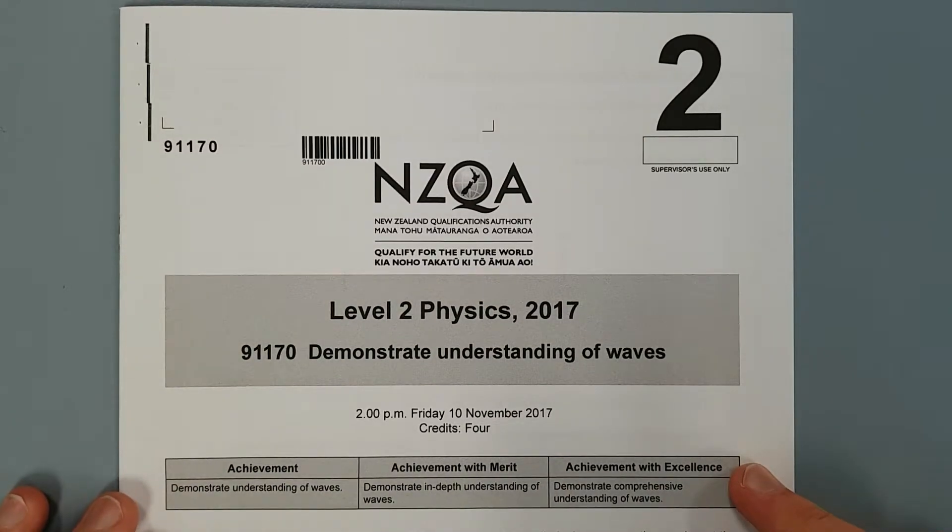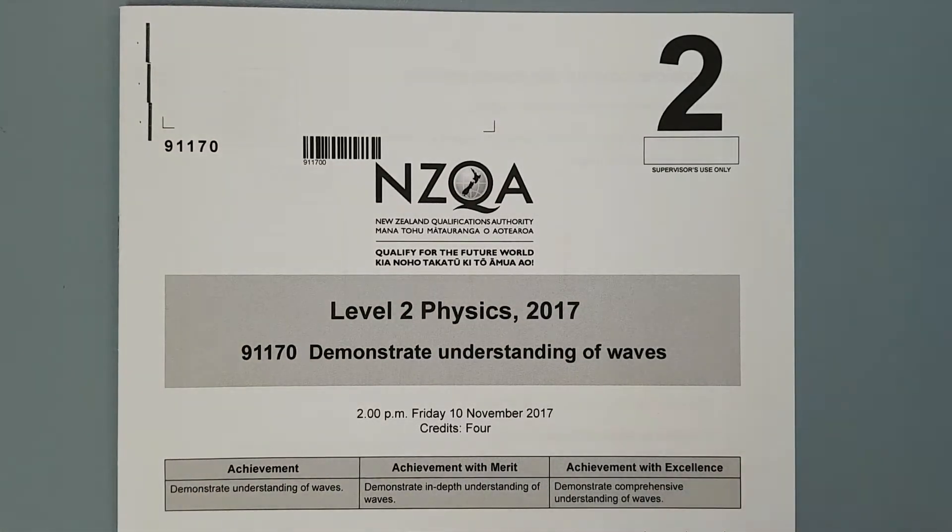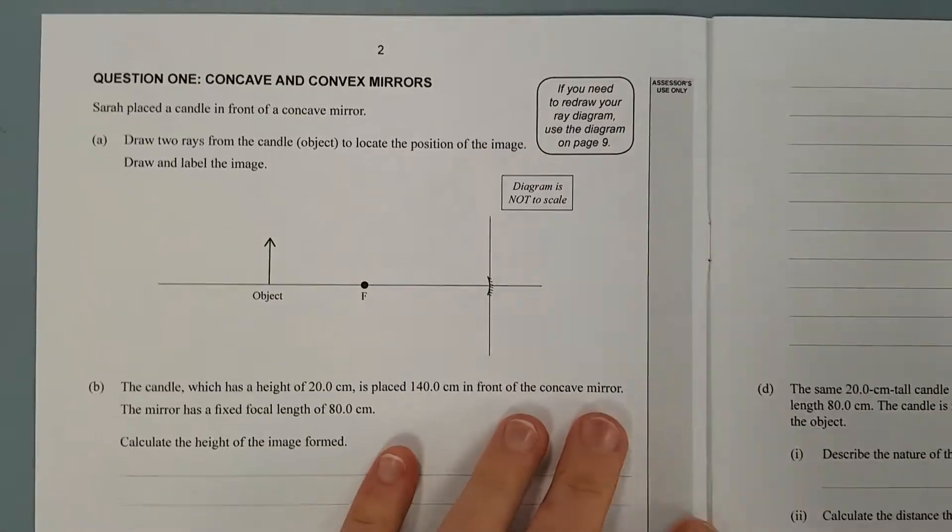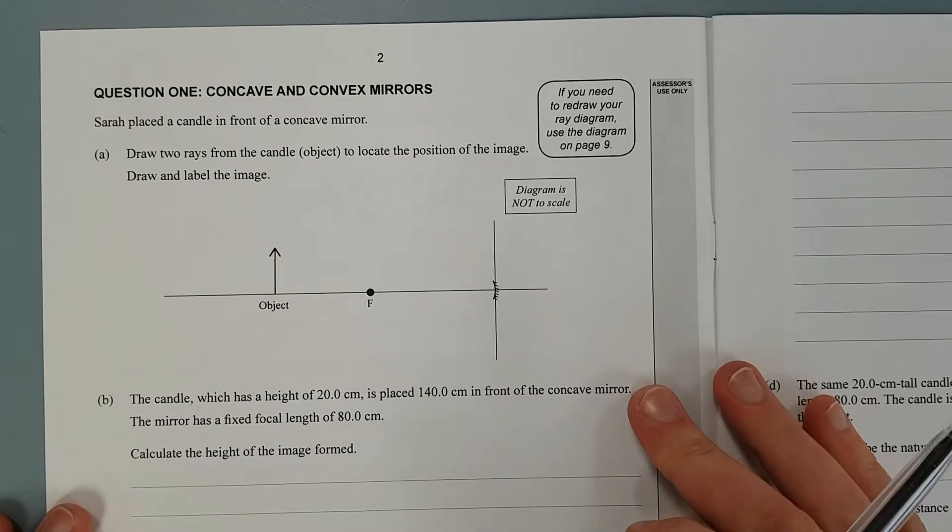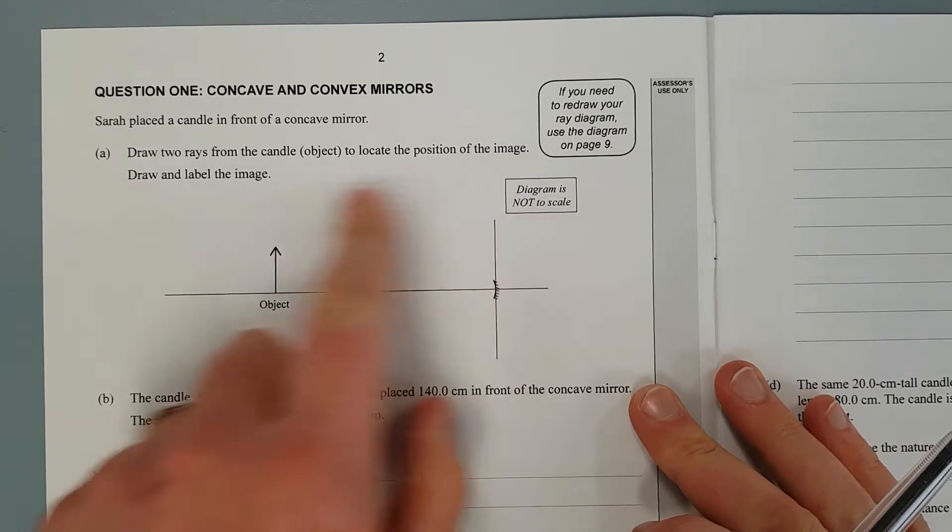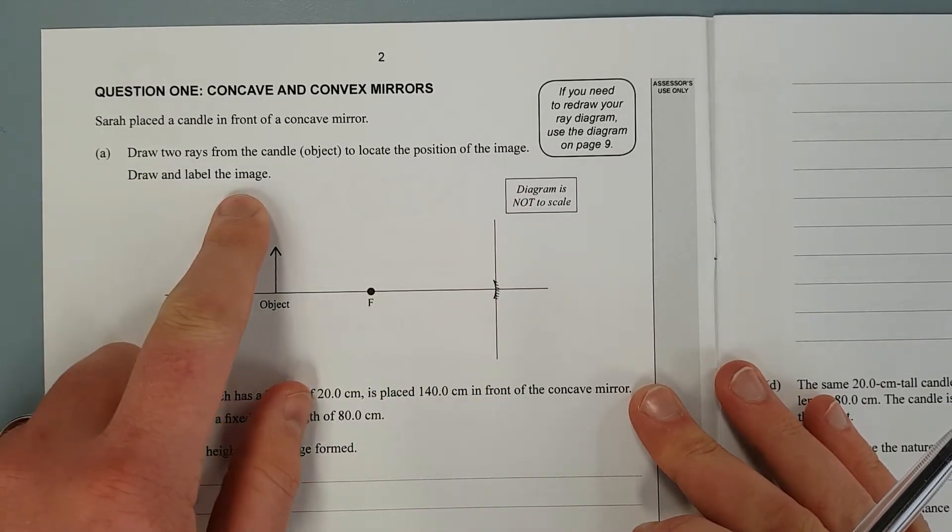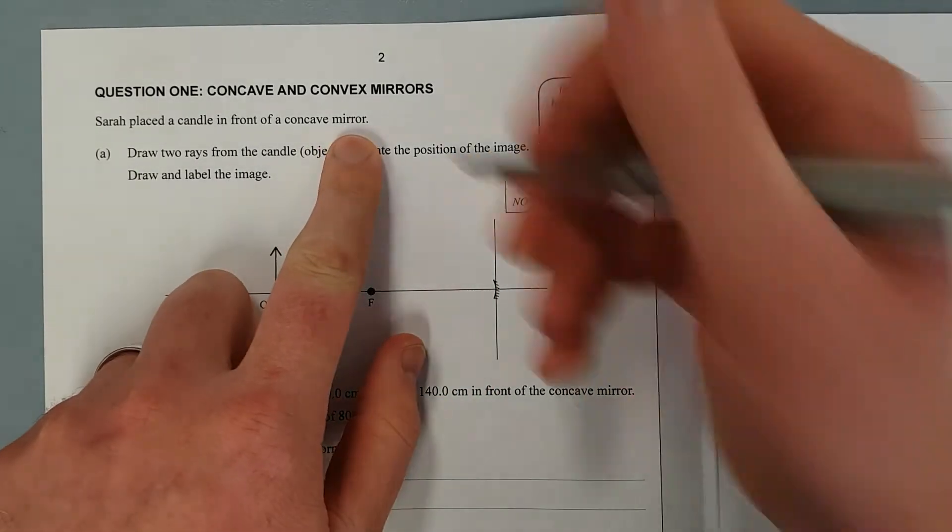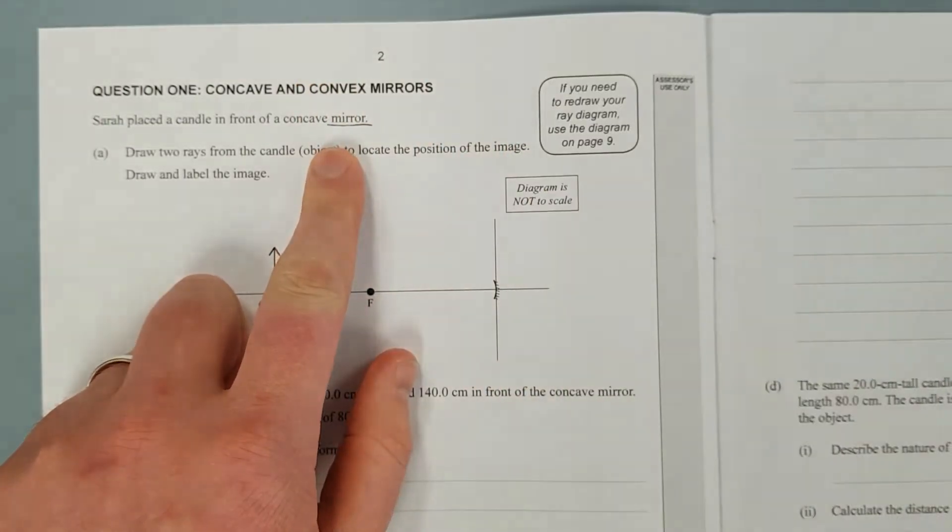For this video I'll be working through question 1 of the level 2 2017 WAVES exam. Question 1. Sarah placed the candle in front of a concave mirror. Draw two rays from the candle object to locate the position of the image. So it's a mirror, we'll just quickly underline that.